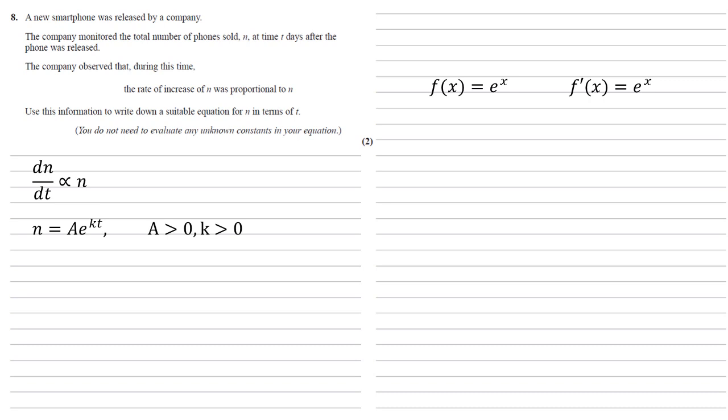So our function is going to be n equals A e to the kt, where A is larger than zero and k is larger than zero, to make sure it's a rate of increase.